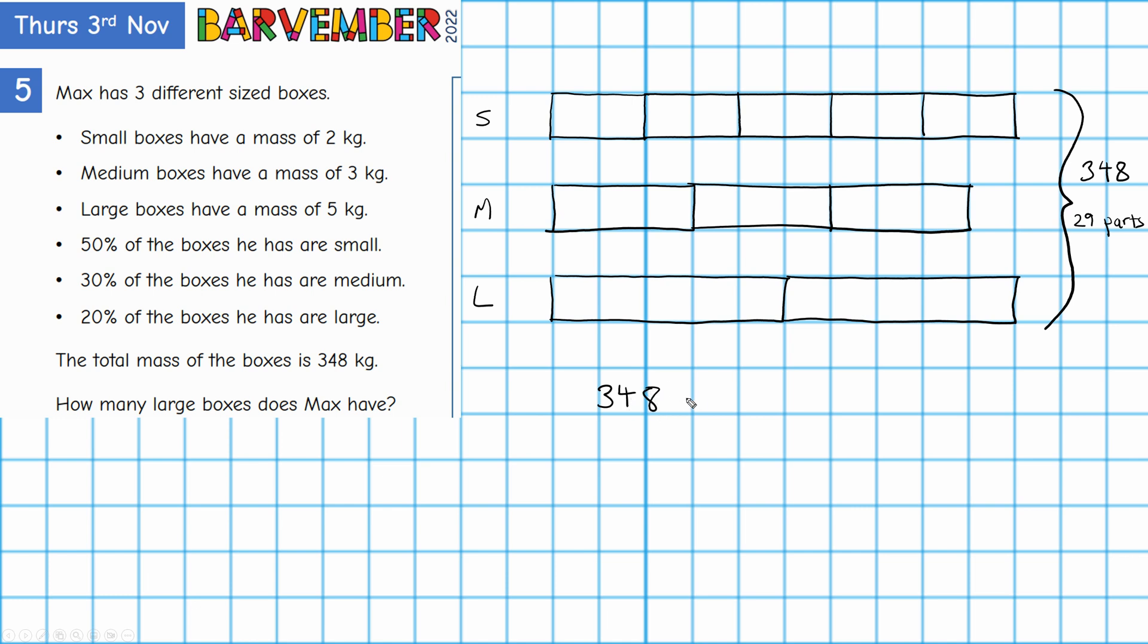Okay. 348, I want to divide that by the 29, okay. 348 divided by 29, okay, gives us 12. All right. So I know that each of these, if that were to be true, that each of these parts has a value of 12.